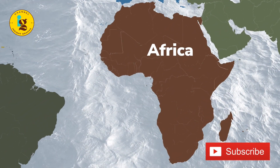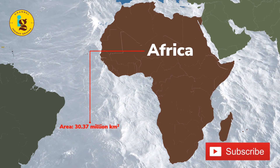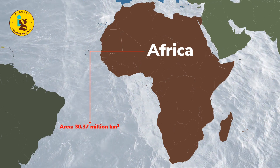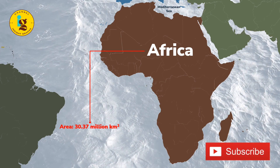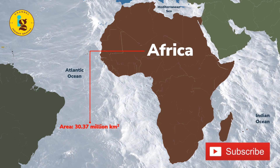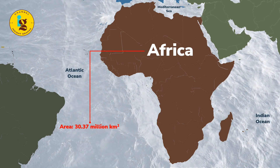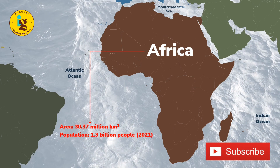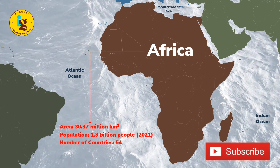Africa is the second largest continent on earth, covering approximately 30.37 million square kilometers. It is located primarily in the eastern hemisphere and is bordered by the Mediterranean Sea to the north, the Atlantic Ocean to the west, and the Indian Ocean to the east. It is the second most populous continent with a population of over 1.3 billion people. Africa is home to 54 countries.